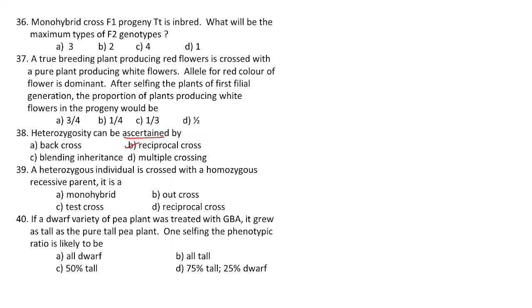Question 39: a heterozygous individual is crossed with a homozygous recessive parent — this is called a test cross. When the F1 individual is crossed with a homozygous recessive parent, it is called a test cross. The answer is test cross.